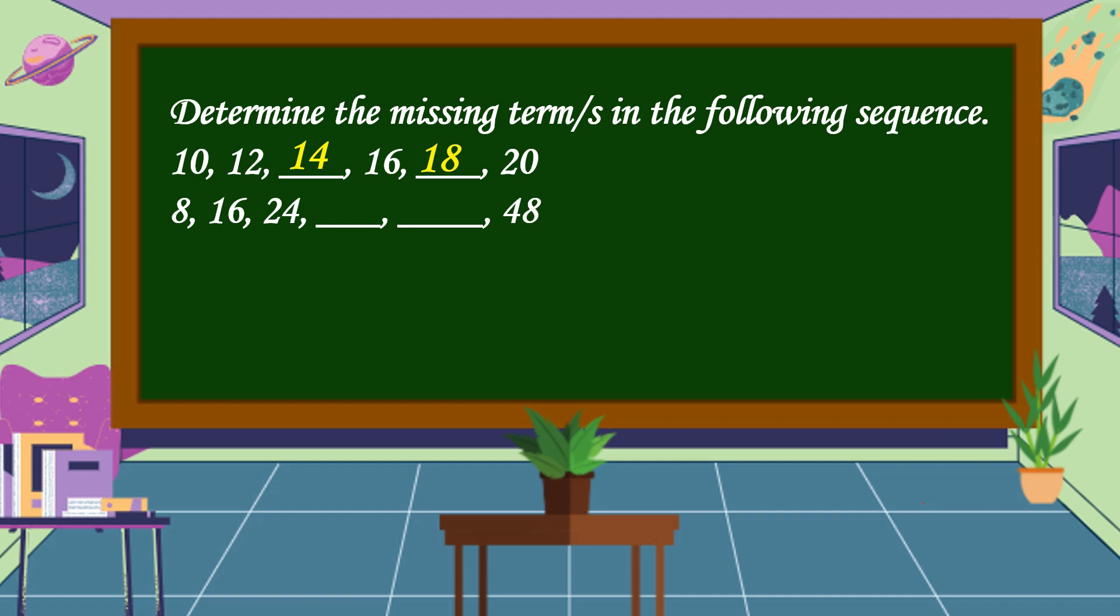Next, 8, 16, 24, blank, blank, 48. What are the missing terms? Very good. The missing terms are 32 and 40. This is skip counting by 8. These numbers are all multiples of 8: 8, 16, 24, 32, 40, 48.